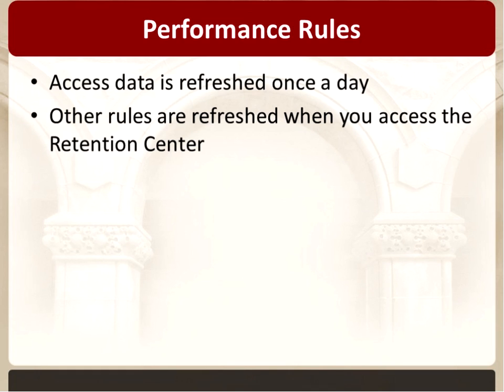To summarize the data refresh: student access data is refreshed once a day. The other rules — missed deadlines, grade, and activity — are refreshed when you access the Retention Center. Blackboard isn't calculating these in the background all the time; it will refresh that information when you go to the Retention Center to look for it. Are there any questions on any of those rules?